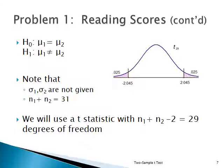We do the hypothesis test. The null hypothesis is that the two means are exactly equal — the mean reading score for men equals the mean reading score for women. The alternate hypothesis is that they're not equal; there is a difference. We will use T with 29 degrees of freedom, computed as n1 plus n2 minus 2, which is 31 minus 2, or 29.